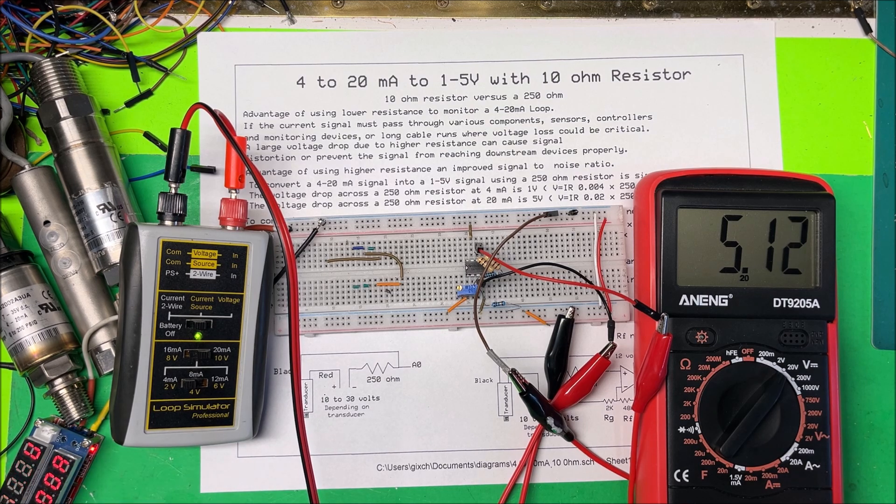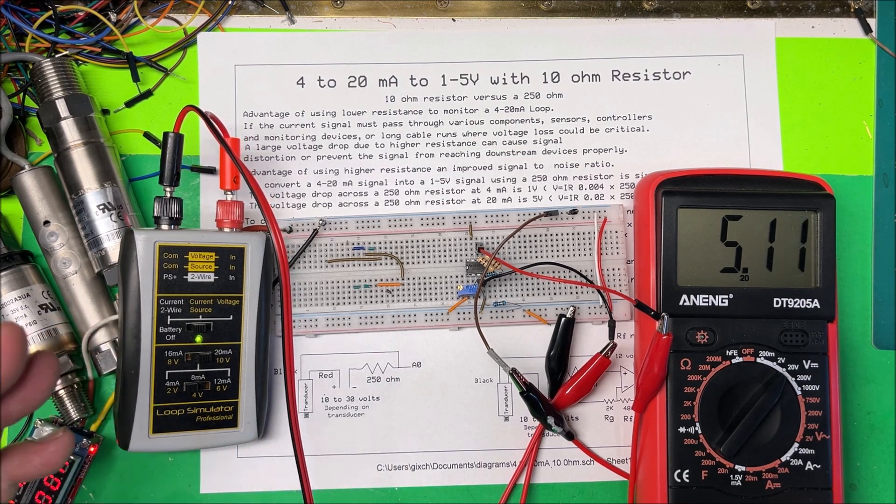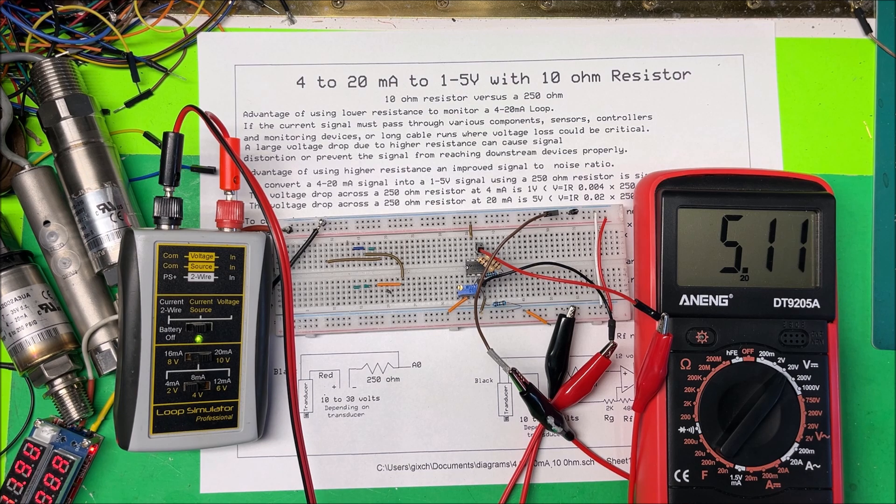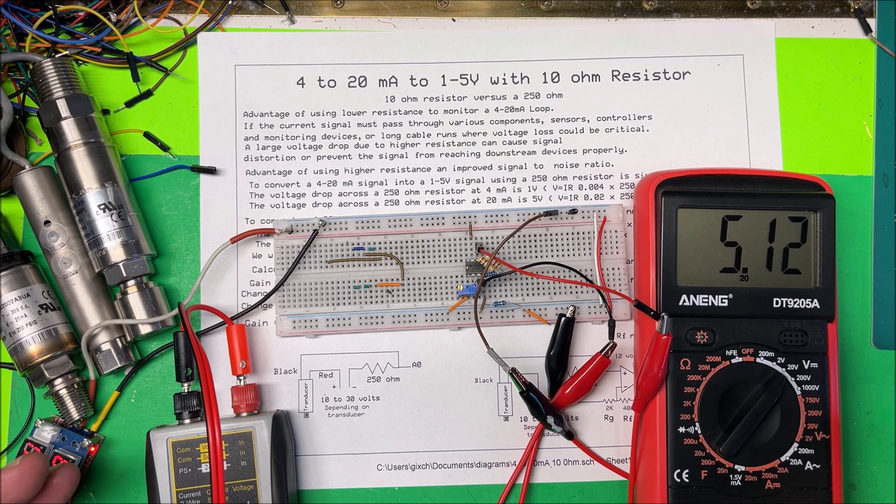But I go from 1 volt to 5 volts, okay. So it works with the 10 ohm resistor. Most of the time you're going to use a 250 ohm resistor, that's going to be a lot better, but if you had to you could use a 10 ohm resistor for that. Anyway, that's the 4 to 20 milliamp loop with the 10 ohm resistor. Thank you.